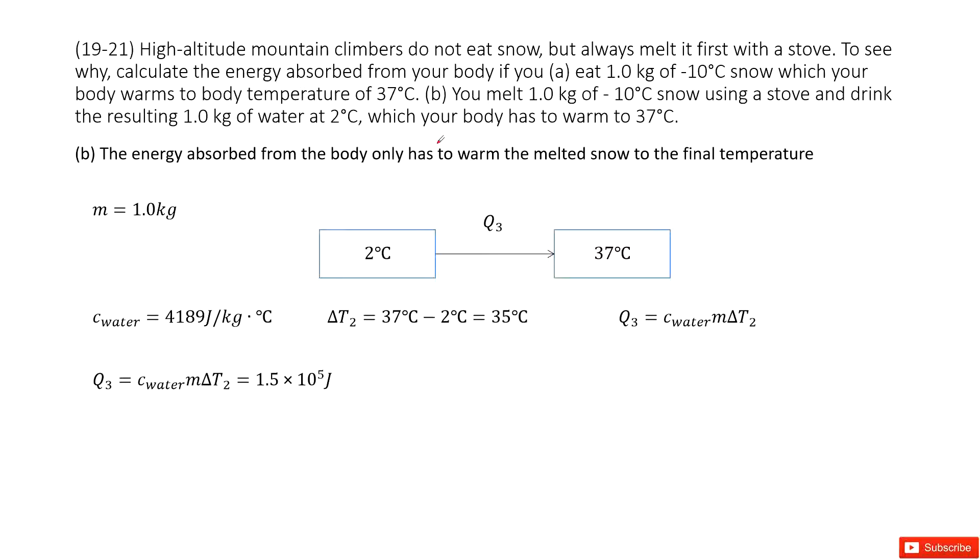Now for the second case, in the first part, you just melt the snow from negative 10 degrees Celsius using the heater, and drink the water at 2 degrees which your body is also 37 degrees. In this process, the first part, the snow from negative 10 degrees to 2 degrees, you don't need to do anything, your body doesn't need to consume energy.